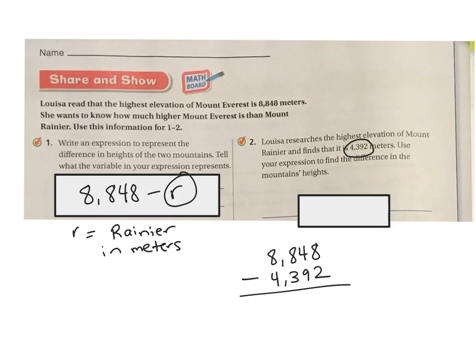8 minus 2 is 6. I can't take 9 from 4, so I'm going to borrow over here. I'm going to make this be a 7. And this will be a 14. 14 minus 9 is 5. 7 minus 3 is 4. And 8 minus 4 is going to be 4. So my answer is going to be 4,456 meters.